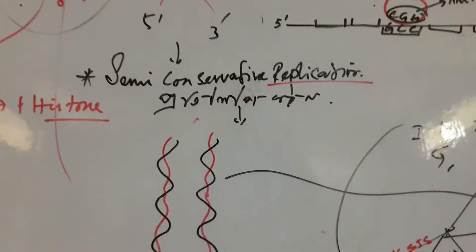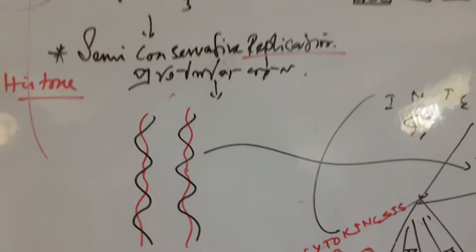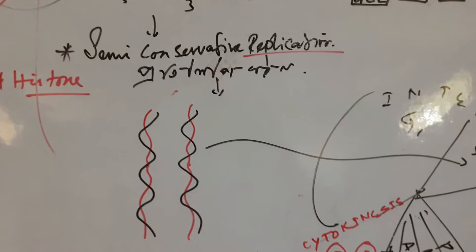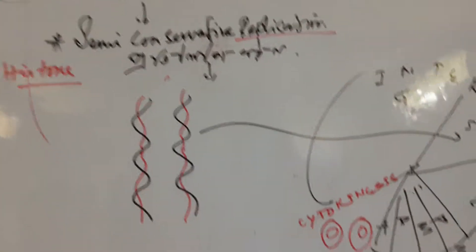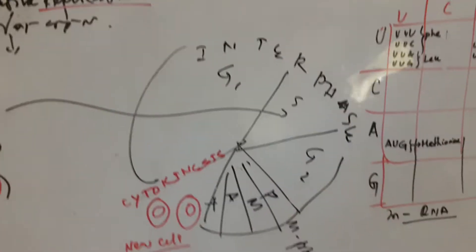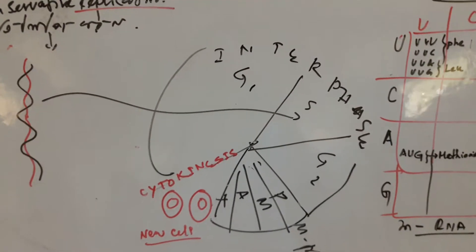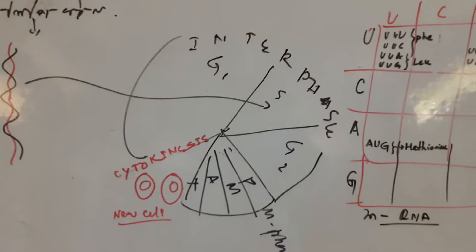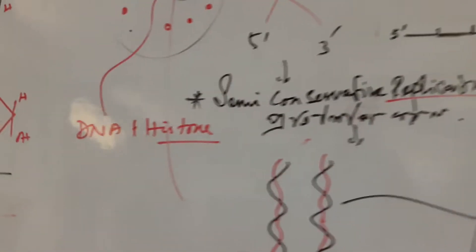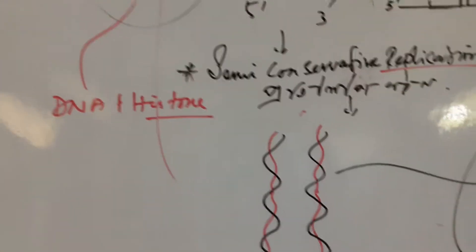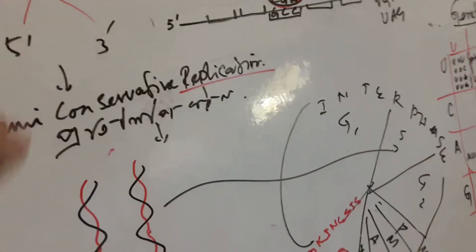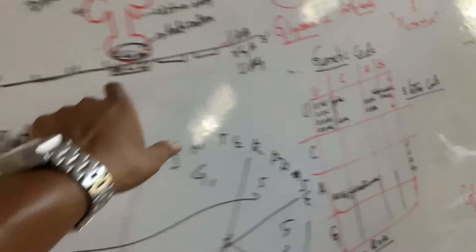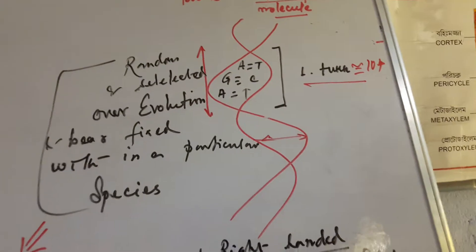So the DNA molecule undergoes the most reliable semi-conservative model of replication, and this actually completes within the S phase of the cell cycle. Now we will concentrate on the intermediate step, that is transcription, which goes from DNA to RNA. Here is a strand of mRNA. Now you see the DNA structure.